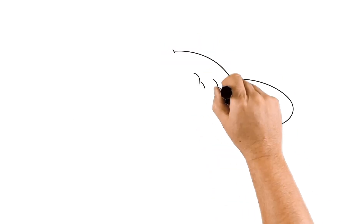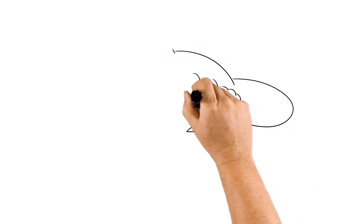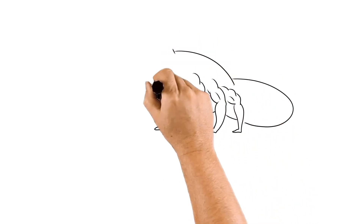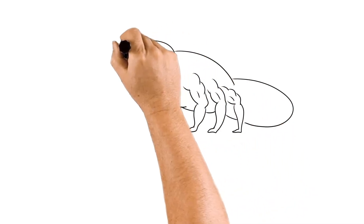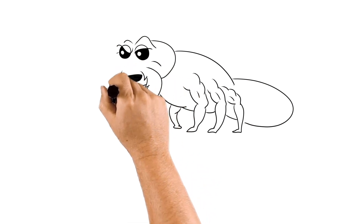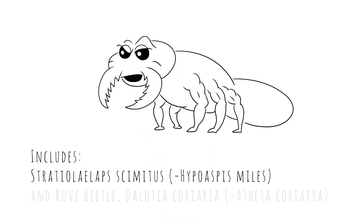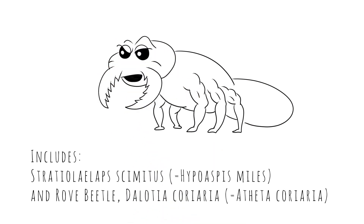Fungus gnat predators are targeted predatory insects, similar to mite predators. They burrow into the soil to seek out fungus gnat larvae. Use alone or in combination with beneficial nematodes.